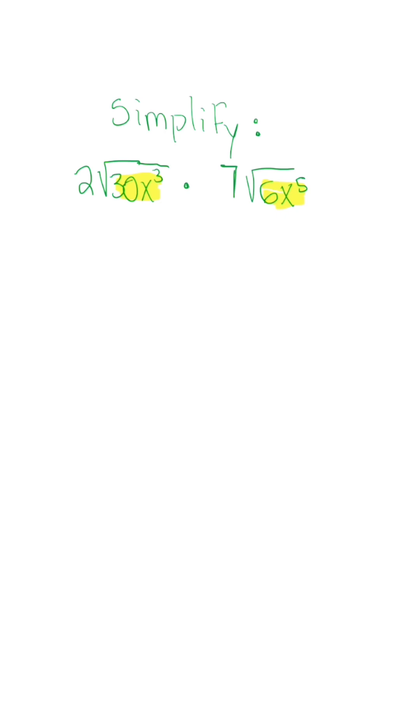This is why I tell you to multiply first then break it down at the end. So after we multiply our coefficients 2 and 7 we get 14. When we multiply our radicals 30 and 6 we're going to get 180x to the third times x to the fifth is going to be x to the eighth.